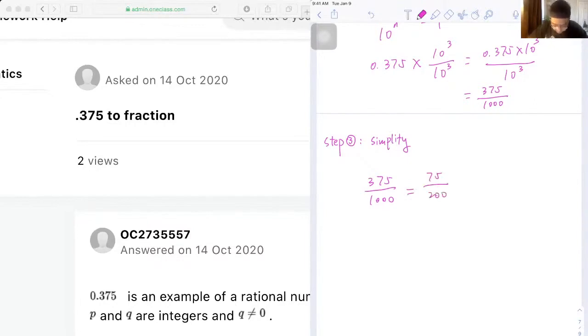And it's ending with either 5 or 0 again, so we can divide by 5 for both numerator and denominator again. So 75 divided by 5 is 15, and 200 divided by 5 is 40.